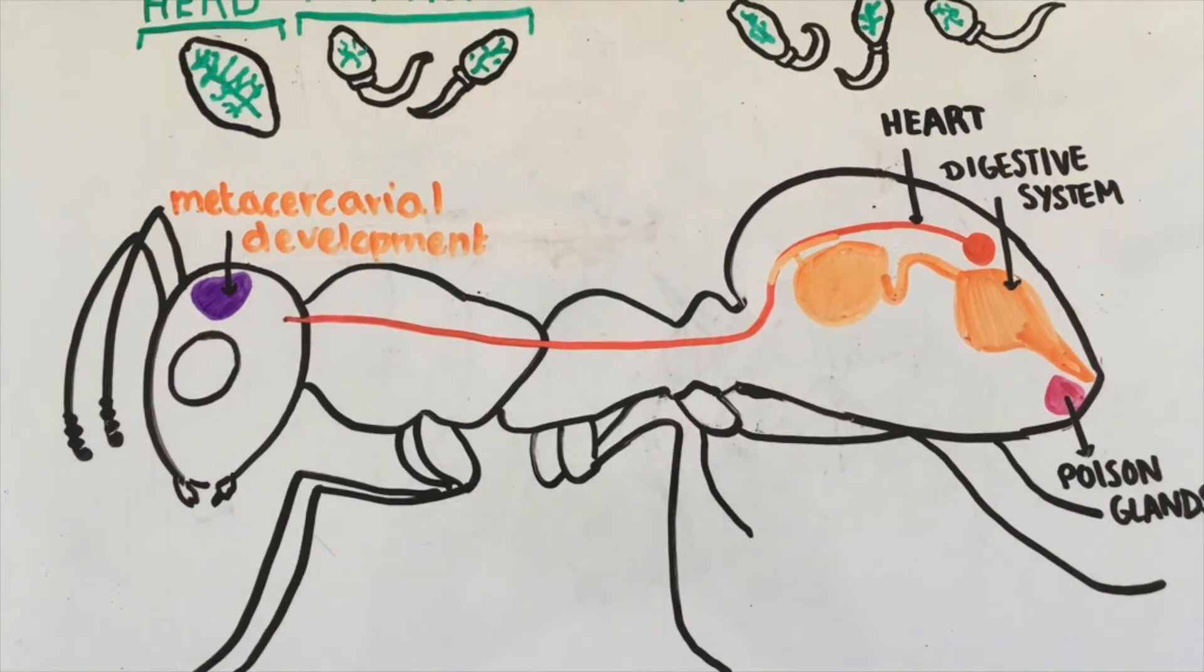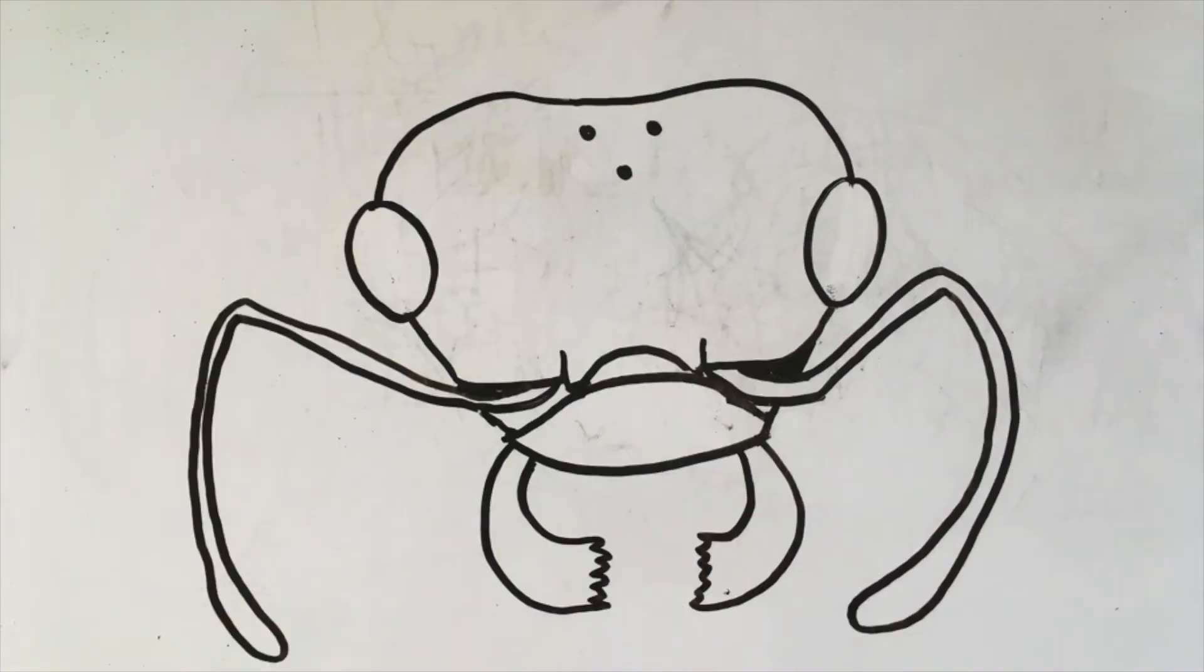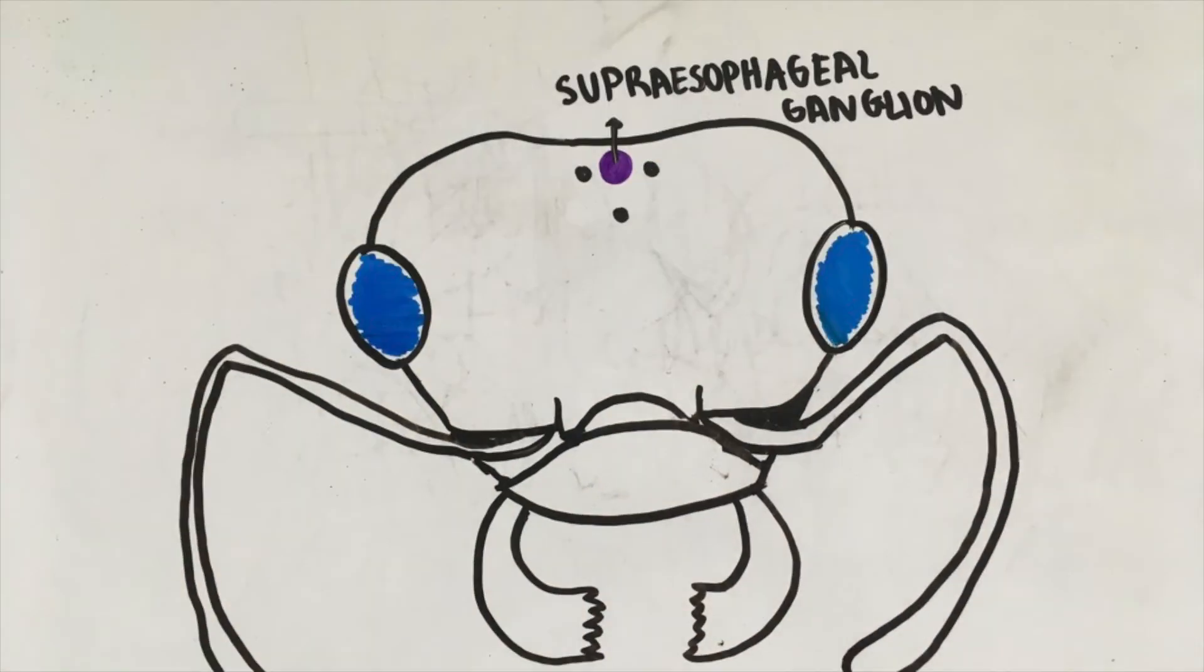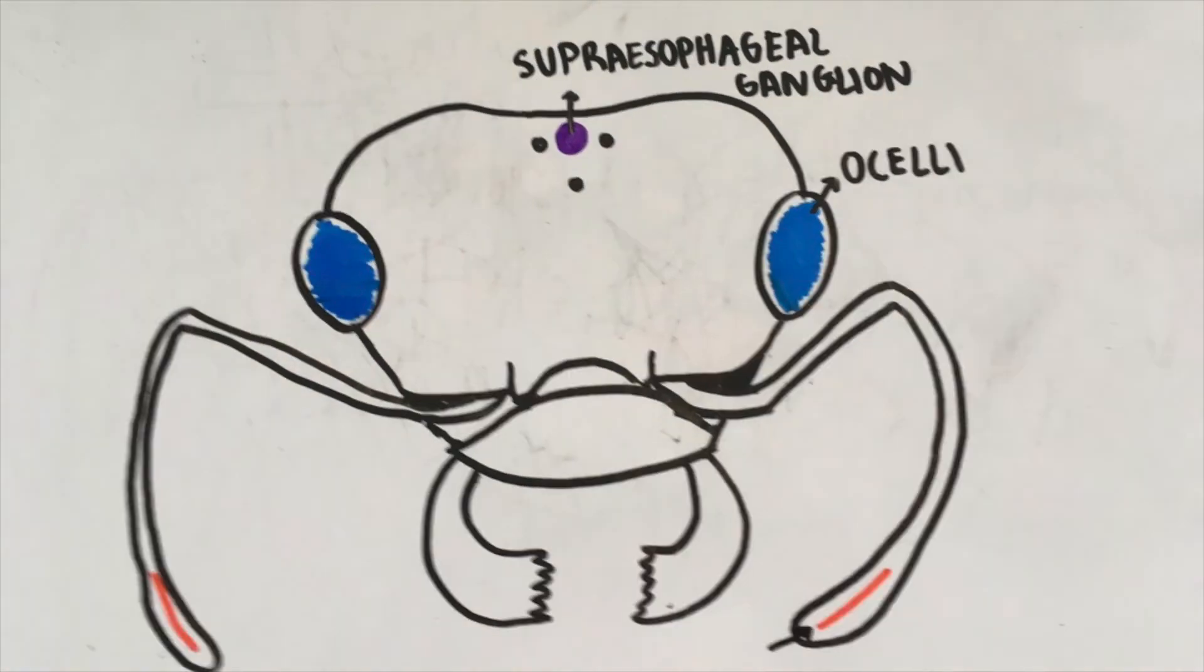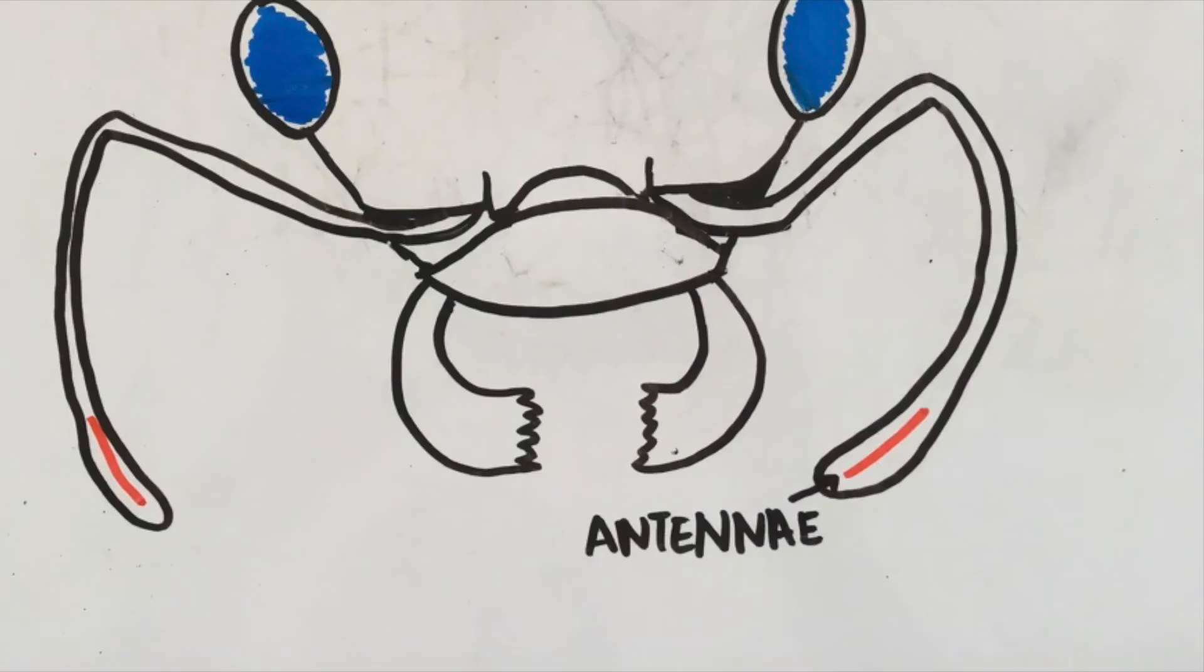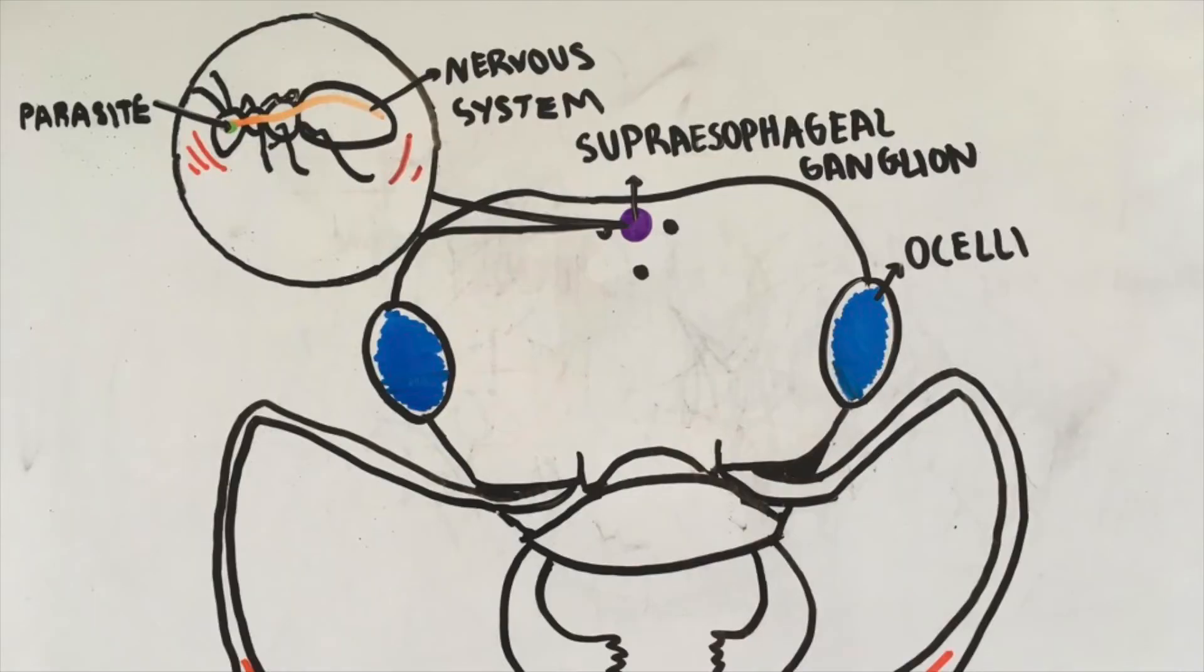This region is the primary site of cercarial development. In the brain, the parasite affects the subesophageal region which controls most of the nervous center which directly controls the ocelli, the antennae, and other sensory organs. The functions that these carry out will all be impaired when the parasite enters the ganglion.